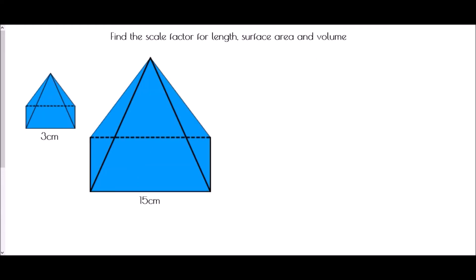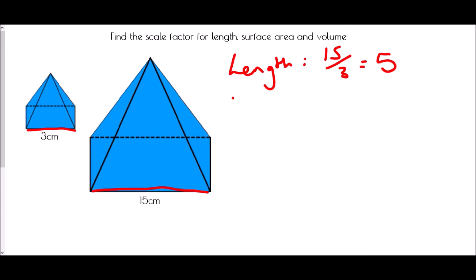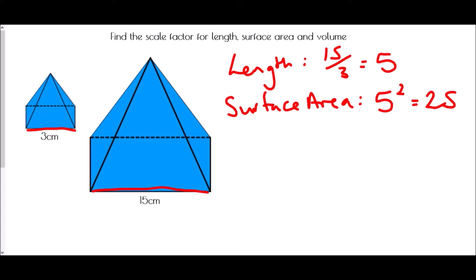In the next one we have a square base pyramid. We have 3 and 15 as the base lengths, so our length scale factor is 15 divided by 3, which is 5. The surface area would increase by the linear scale factor squared: 5 squared is 25. And the volume would be the linear scale factor cubed, because it's going to happen in 3 dimensions: 5 cubed is 125.